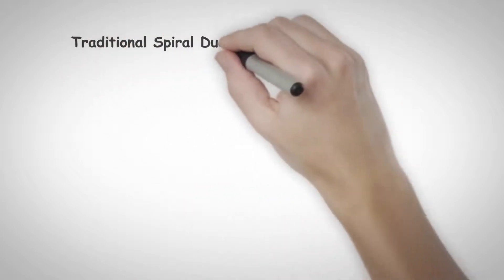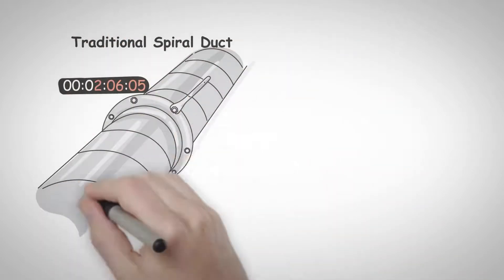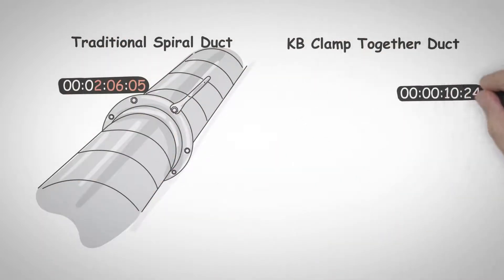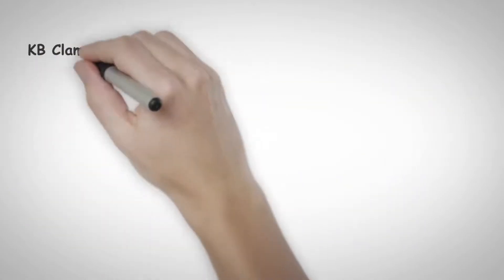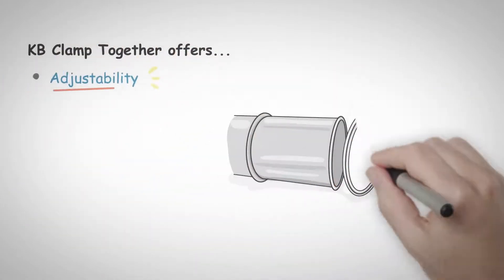Because the concept behind Clamp Together Duct is similar to that of building sets and blocks, installation time for KB Duct is generally measured in minutes, not hours, as occurs with traditional spiral duct.